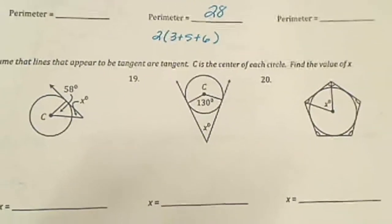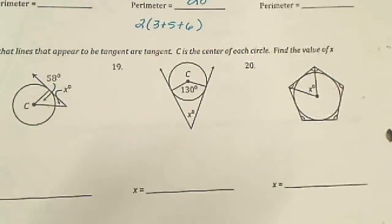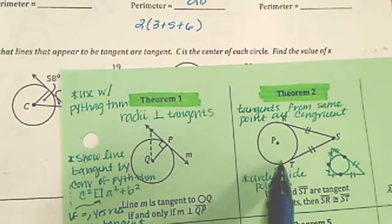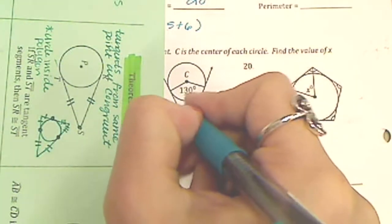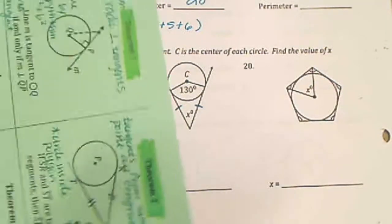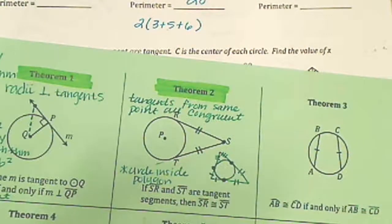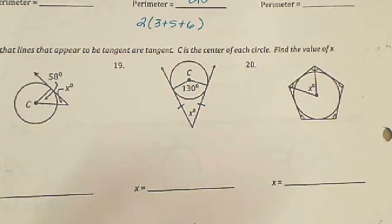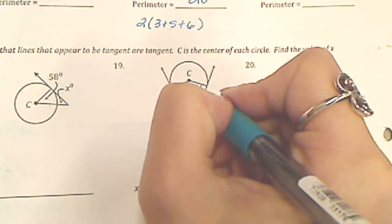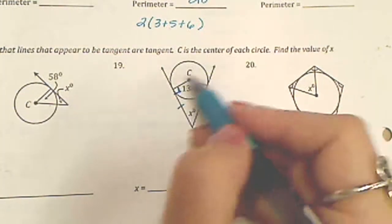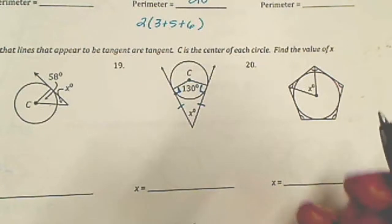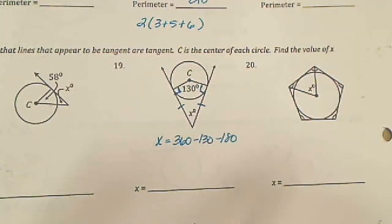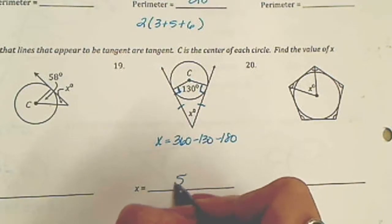Number 19 tells us the lines are tangent and we're looking for x. I have two options. First I think of theorem two — those two pieces being equal — but that doesn't help me since I'm looking for angles. So I use theorem one: radii are perpendicular to tangents. I do have a radius and a tangent here and another one here. A four-sided shape adds up to 360 degrees. So x equals 360 minus 130, minus 90, minus 90 — which is 360 minus 310 — so x equals 50 degrees.